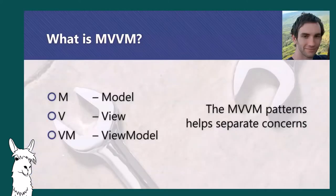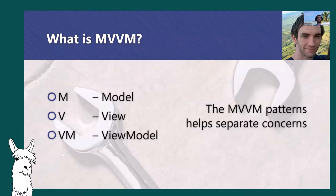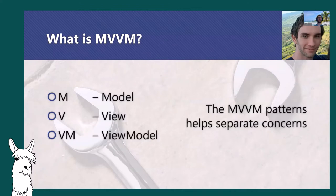Thanks Michael. So we thought we'd start with a brief introduction of the MVVM pattern for those not familiar with it. MVVM is a software architectural pattern that can be used to develop applications. Its main purpose is to help separate concerns. The core idea is to structure the code base into three different components which are then loosely coupled. These three main components are the model, the view, and the view model.